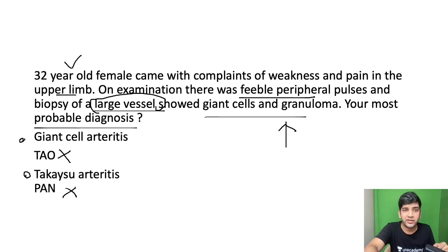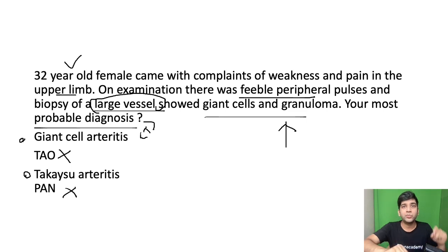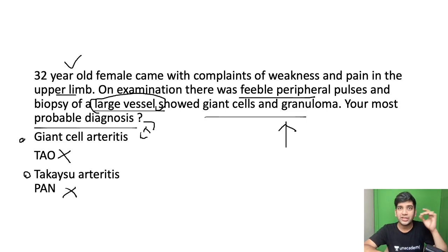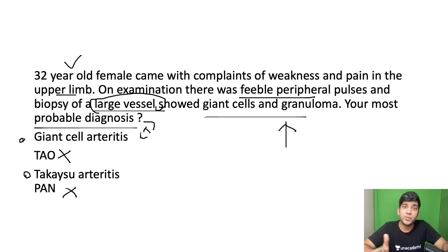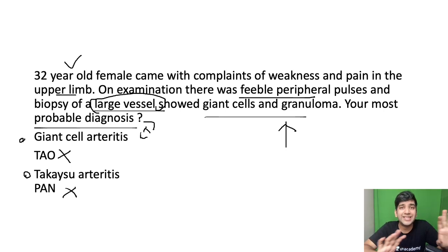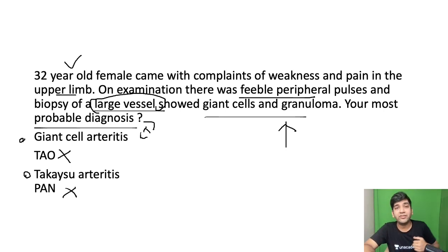What's the other name of giant cell arteritis? It is temporal arteritis. It's called temporal arteritis not because it involves the temporal arteries more, but because it is superficial and easy for us to study. We study the entire disease pathogenesis based on temporal artery biopsies — so it is named temporal arteritis. It can involve any vessel.